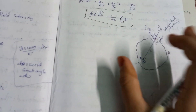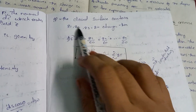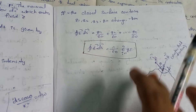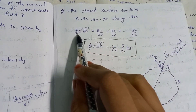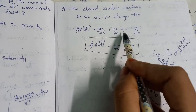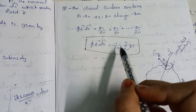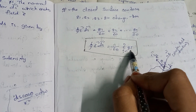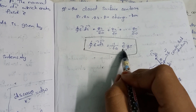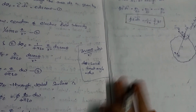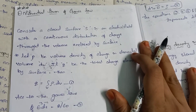If the closed surface contains multiple charges Q1, Q2, Q3, ... Qn, then the total electric flux is φ = Q1/ε₀ + Q2/ε₀ + ... + Qn/ε₀, which equals (1/ε₀) × ΣQi, where the summation is from i equal to 1 to n. This completes the proof of the integral form of Gauss's law.